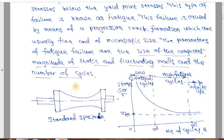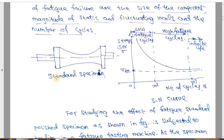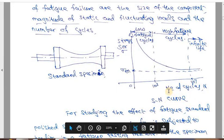This type of failure is called fatigue failure. The different parameters which affect fatigue failure are: the size of the component, the magnitude of the static and fluctuating load, and the number of cycles.